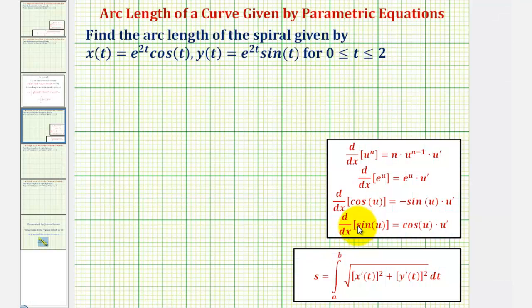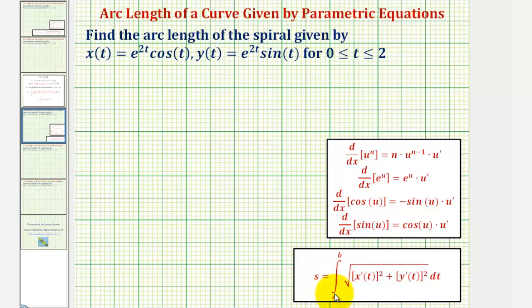The arc length is equal to the integral of the square root of the quantity x prime of t squared plus y prime of t squared, integrated from a to b — or in our case from zero to two. Let's begin by determining x prime of t and y prime of t.